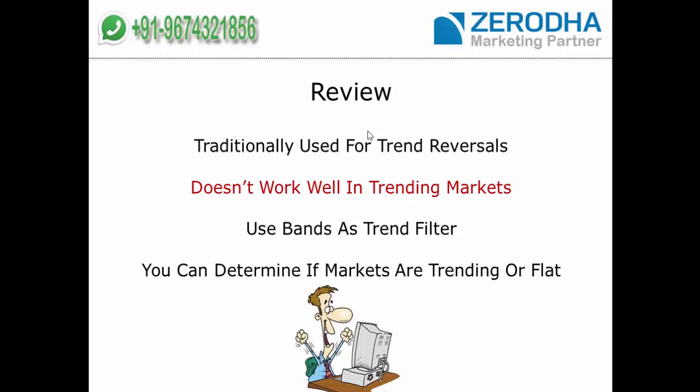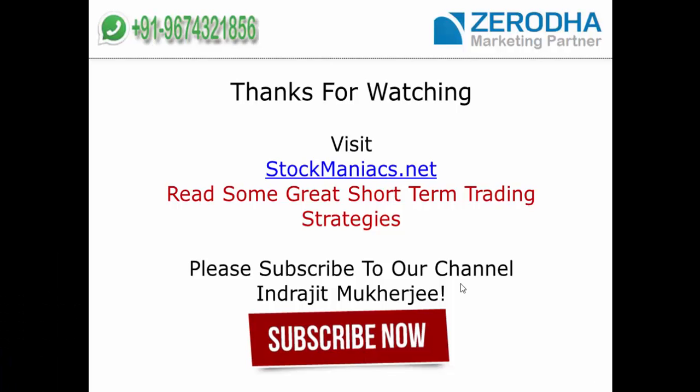A short review of what we have learned: traditionally Bollinger Bands are used for trend reversals. The ping-pong ball strategy does not work well in trending markets. However, once you see price moving along one band — either upper or lower — with the band clearly sloping, you can use a trend-following strategy. Bollinger Bands can be used as a trend filter to successfully determine if the market is trending or flat.